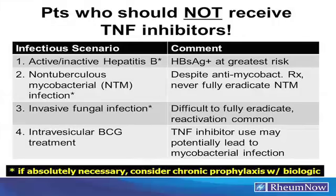There are several scenarios where TNF inhibitors should not be used. First, hepatitis B surface antigen positivity. Second, non-tuberculous mycobacterial (NTM) infections — you can clear TB, but you never clear NTMs, making them high-risk. You can use abatacept and tocilizumab safely in those patients. Third, invasive fungal infections — not oral thrush, but systemic candidiasis or aspergillomas — are never fully eradicated. Fourth, patients receiving intravascular BCG or BCG vaccination.